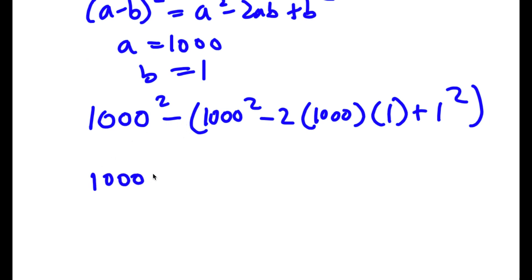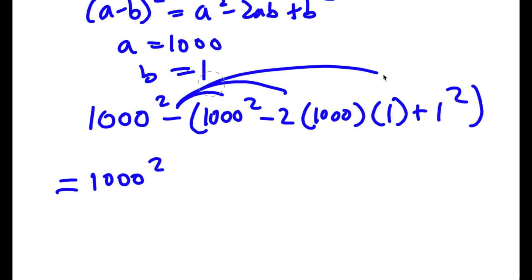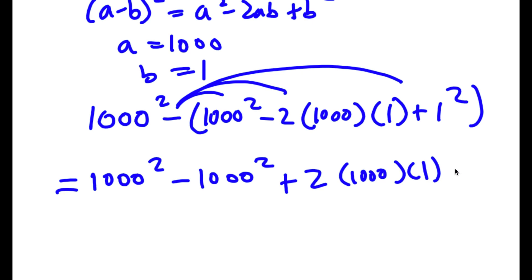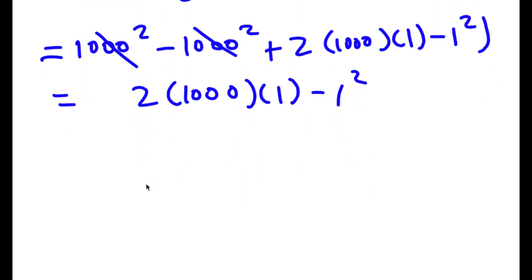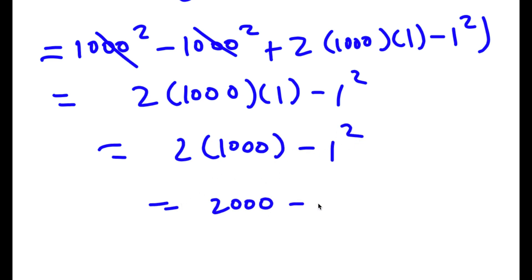Now I have 1,000 squared. Distributing the negative sign to all three terms gives negative 1,000 squared plus 2 times 1,000 times 1 minus 1 squared. The 1,000 squared terms cancel out, leaving 2 times 1,000 times 1 minus 1 squared. That's 2 times 1,000 minus 1, which is 2,000 minus 1, equal to 1,999.